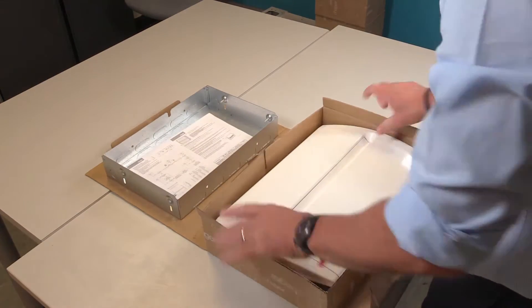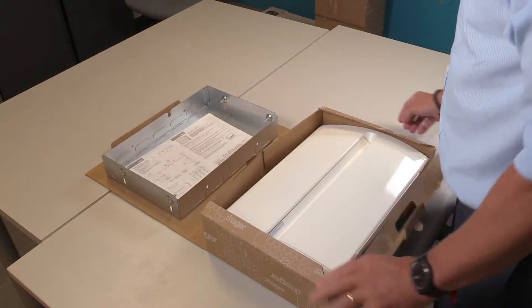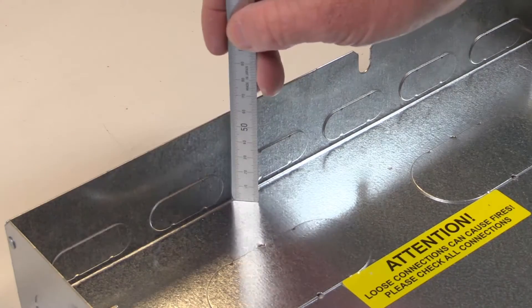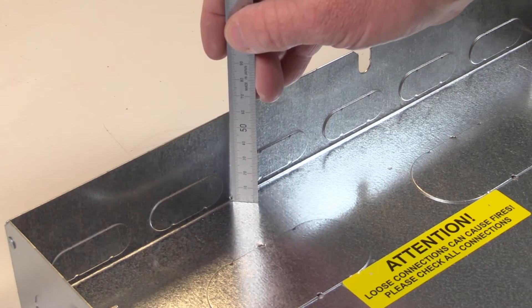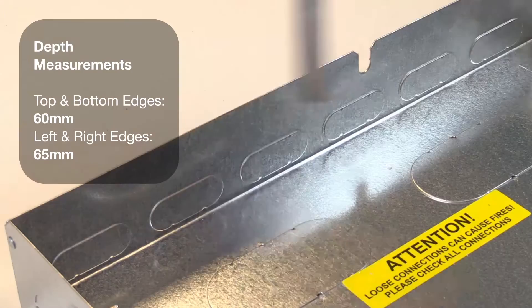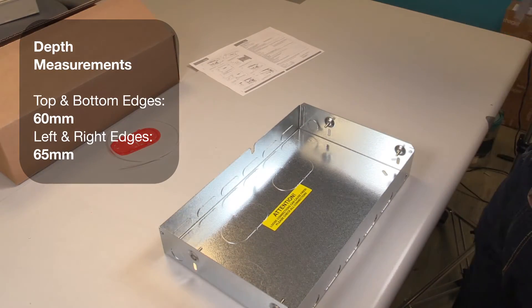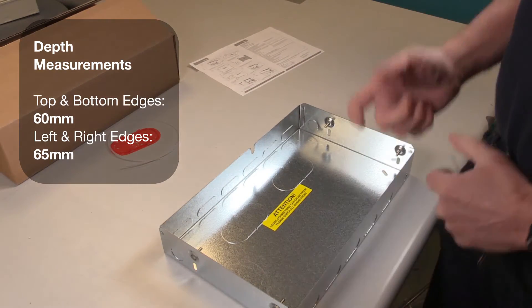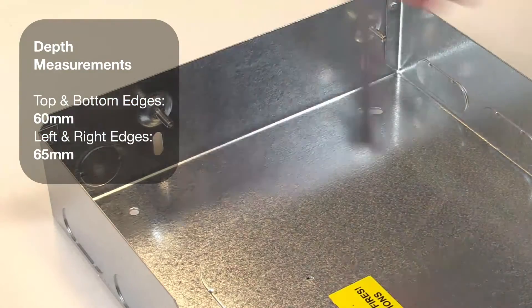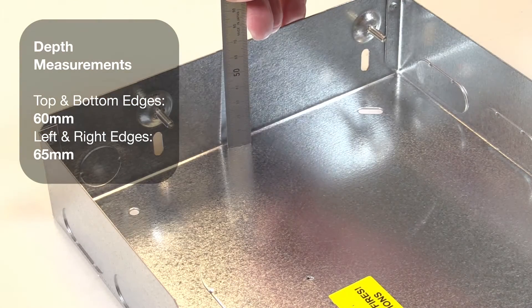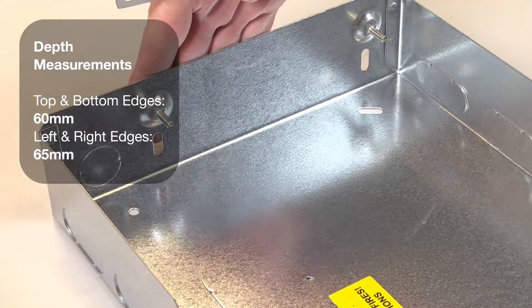Before installing a flush consumer unit, we need to understand how deep into the wall the back box needs to be. The top and bottom edges are 60 millimeters deep and need to be no further forward than flush with the stud work. The side edges are 65 millimeters deep. These raised edges allow you to have an edge to work up to with the plasterboard.